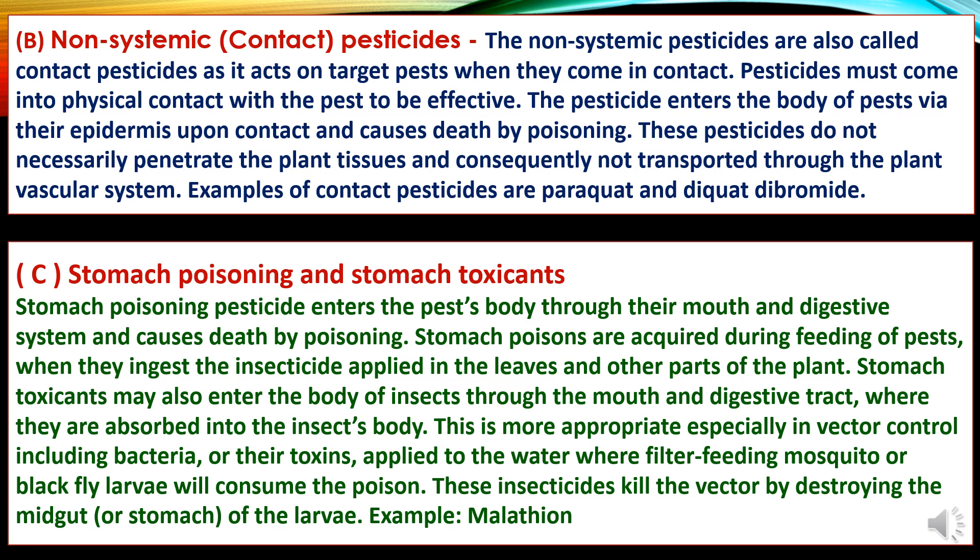Third is stomach poisoning and stomach toxicants. Stomach poisoning pesticides enter the pest's body through their mouth and digestive system and cause death by poisoning. Stomach poisons are required during the feeding of pests when they ingest the insecticide applied to leaves and other parts of the plant. Stomach toxicants may also be absorbed into the insect's body through the mouth and digestive tract. This is particularly appropriate in vector control, including bacteria or their toxins applied to water, when filter-feeding mosquito or black fly larvae consume the poison. These insecticides kill the vector by destroying the midgut or stomach of the larvae. An example is malathion.